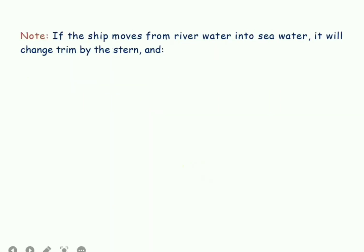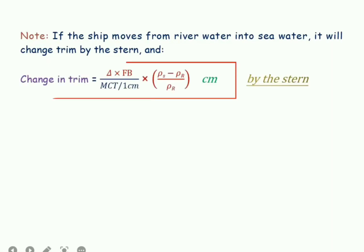If things get changed — let's say instead of moving into water of lower density, the ship now moves into water of higher density — quite obviously there will occur a decrement in the underwater volume. In such a case, the change of trim will be given by delta into FB divided by MCT, multiplied by (Rho S minus Rho R) upon Rho R, in centimetres.